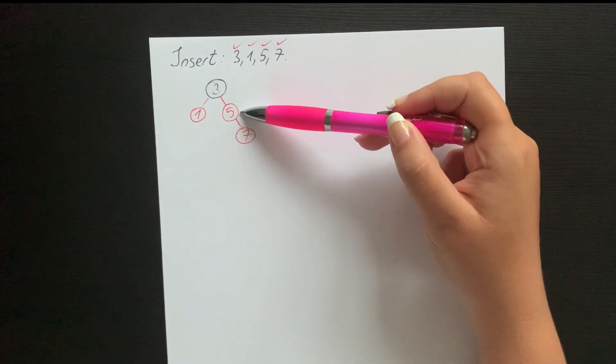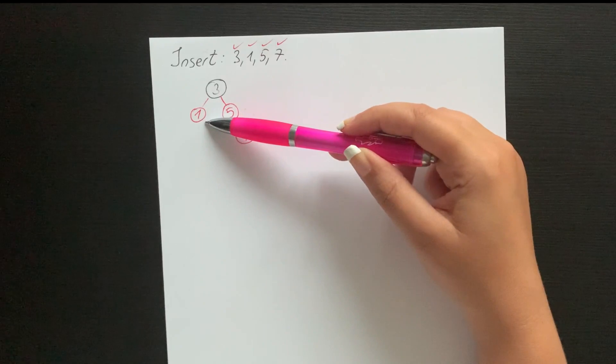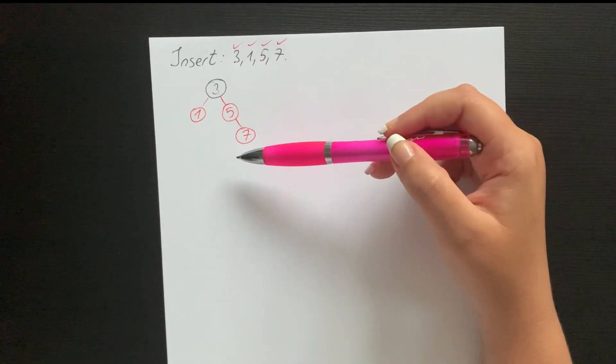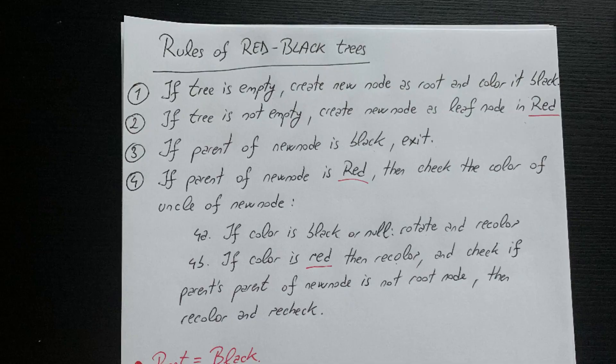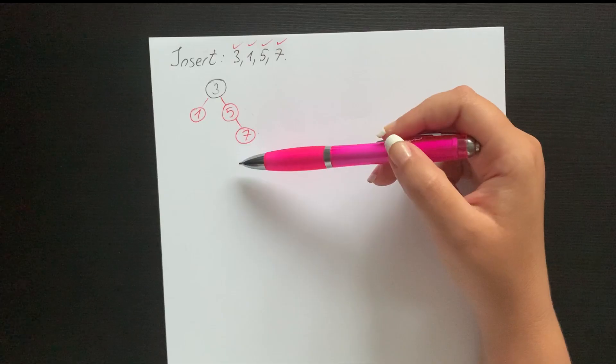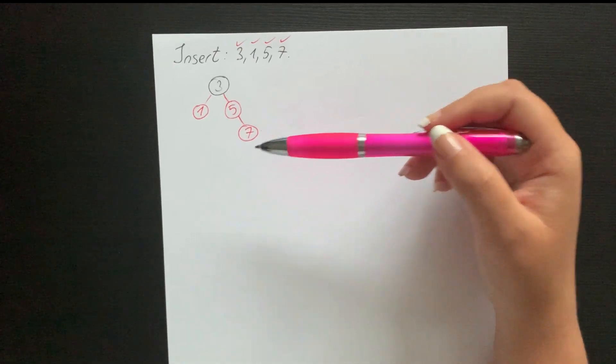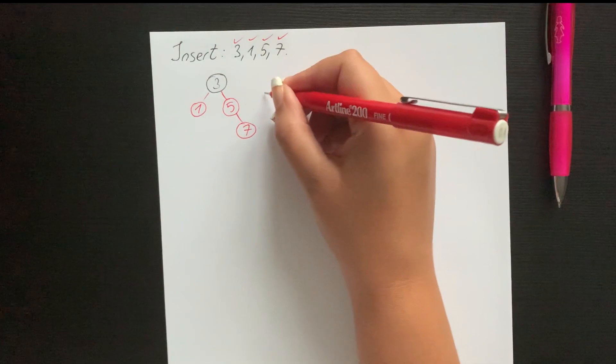Now we look at rule number four b, which says if color is red then recolor and check if parent's parent of new node is not root node, then recolor and recheck. All right, so now what we need to do is recolor and we do it like this: we will have three as red, then one black, five is gonna be black, and seven is gonna be red.